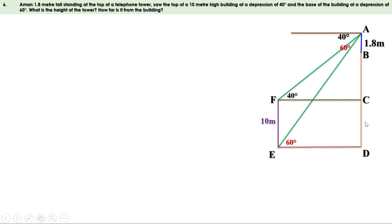We need to find the height of the telephone tower BD and the distance AD between the telephone tower and the building. Let AD equal x, then CF is also equal to x. Let us identify two right triangles: ACF and ADE. In triangle ACF, based on the 40-degree angle, AC is the opposite side and CF is the adjacent side.